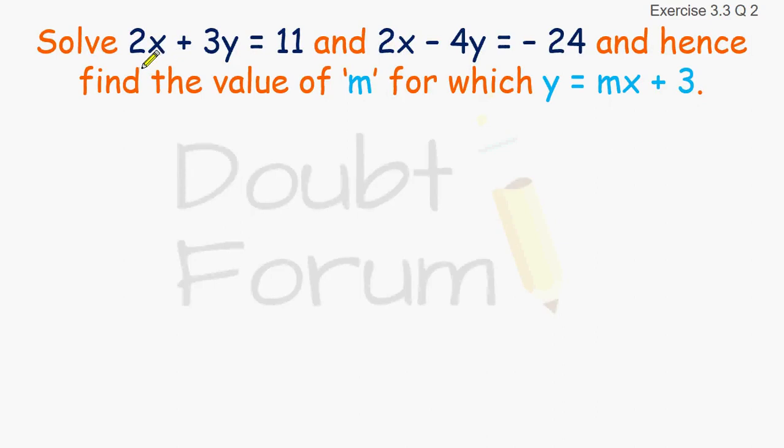The linear equations given are 2x plus 3y equals 11 and 2x minus 4y equals minus 25. We have to find out the value of x and y. So this is the first part of the problem.